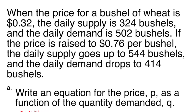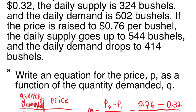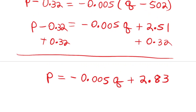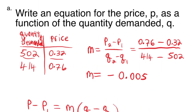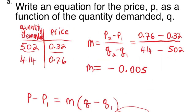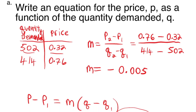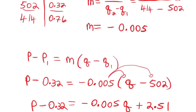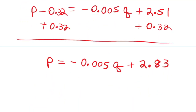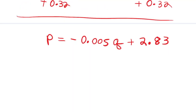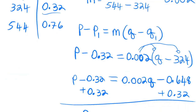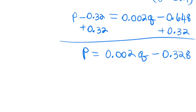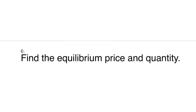What we want to do is come up with a supply equation and a demand equation. The red one is my demand curve and the blue one is my supply curve. What we want to do is find the equilibrium price and the equilibrium quantity.